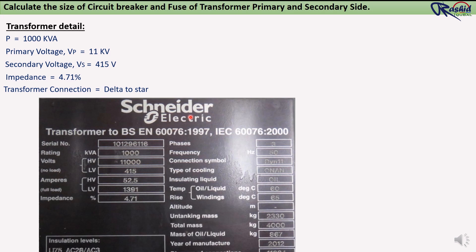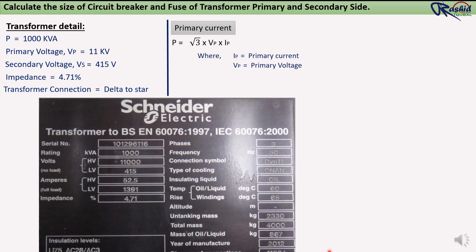Now first we need to find out the full load current of this transformer at the primary and secondary side. Although the current rating is already written on the nameplate, still for your understanding we will calculate primary and secondary current here. The formula is P = √3 × Vp × Ip, where Ip is the primary current and Vp is the primary voltage.